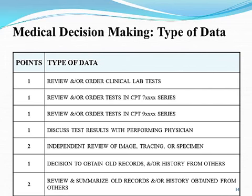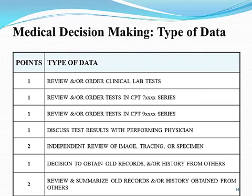Independent review of image tracing or specimen is worth two points and we know this occurs all the time. You're independently reviewing — you're not the one billing for that professional component. If you are billing the professional component, credit wouldn't be given here. But if you are independently reviewing that image tracing or specimen, clearly document that you independently reviewed it. Use verbiage like 'I independently reviewed' or 'I personally reviewed' and give a brief description of what you found.